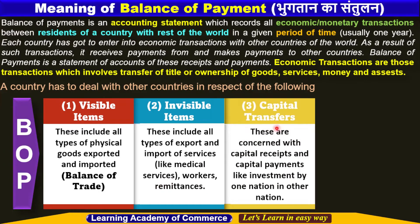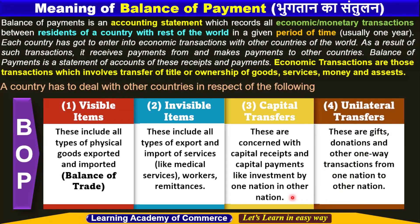The third one is capital transfers. Balance of payments also includes capital transfers. These are concerned with capital receipts and capital payments like investment by one nation in another nation. The fourth one is unilateral transfers. These are gifts, donations and other one-way transactions from one nation to other nations. So a country has to deal with other countries in respect of these four items included in balance of payments.